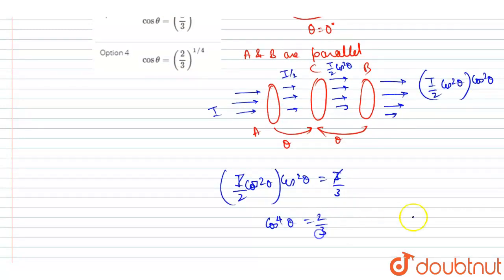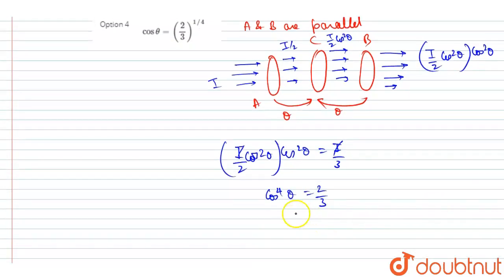So from here we can write theta is 2 by 3 to the power 1 by 4, cos inverse. Simple, so this will be your answer.